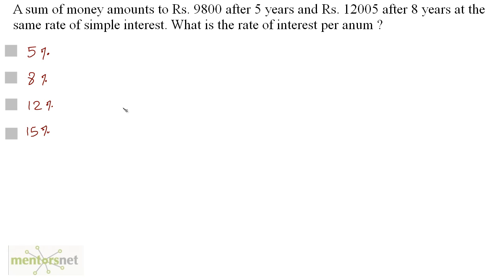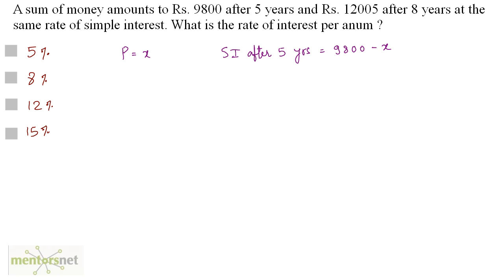A sum of money amounts to Rs 9,800 after 5 years and to Rs 12,005 after 8 years at the same rate of simple interest. What is the rate of interest per annum? Let us consider the principal amount be Rs x. The simple interest after 5 years is equal to the amount minus the principal, so 9,800 minus x. Similarly, the simple interest after 8 years is equal to 12,005 minus x.